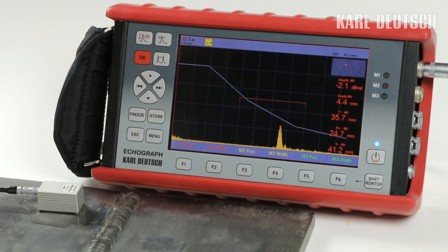As you can see, the adjustment of the Echograph 1095 for weld inspection is quick and easy due to the many wizards. Thank you for watching our video. See you next time!